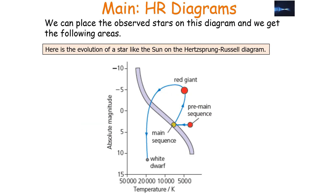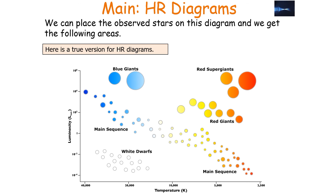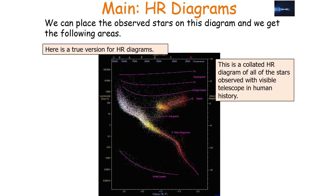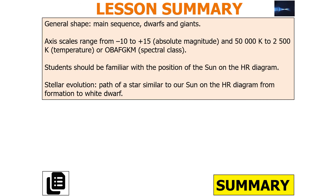You can see here a bit more clearly the evolution of a star like the Sun on the Hertzsprung-Russell diagram. The Hertzsprung-Russell diagram covered in AQA A-level physics is a slight simplification — a more thorough version also exists. This is a collated Hertzsprung-Russell diagram of all the stars observed with visible telescopes in human history, and the distinct regions of the diagram are clearly visible.